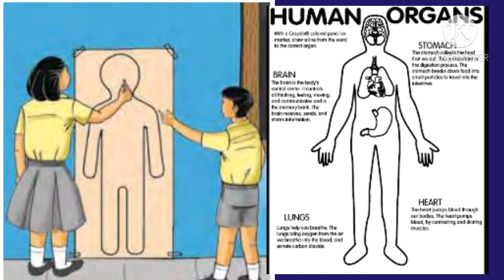Now recall the following details about each of the organs: first, in which cavity of the body is it situated; second, what is its function; third, which are the bones that protect it. Let's see one by one.